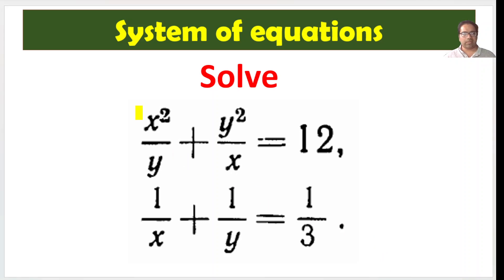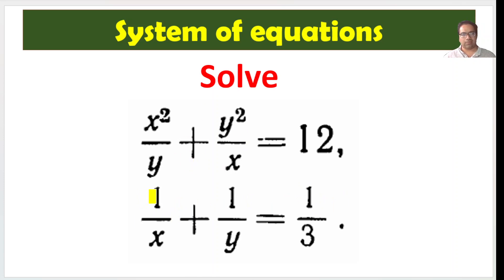If you do the cross multiplication, what do you get? We get x cubed plus y cubed equals 12xy. Similarly, for the second equation, 3 times x plus y equals xy. If you do the cross multiplication, both system of equations will simplify in this way.